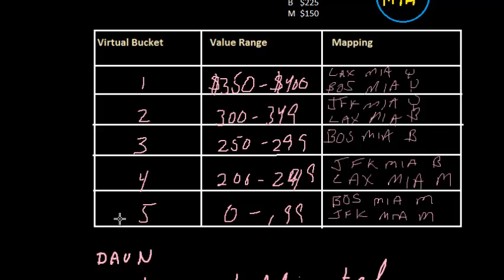In the videos on EMSR, we used EMSR to calculate protection levels for fare classes. We then turned those protection levels into booking limits, and those booking limits were given to the reservation system to sell the inventory.